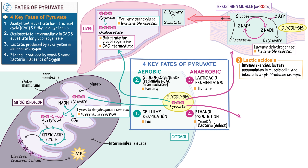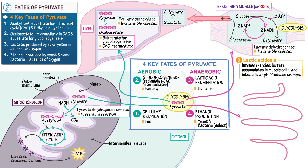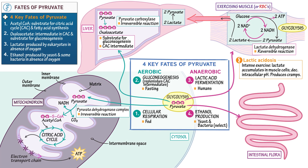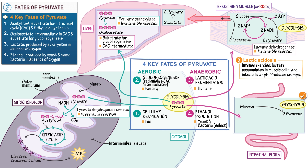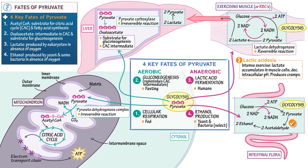This brings us to our final pathway: ethanol production. Draw an intestine to indicate that this can occur in our intestinal flora. Show that a glucose molecule in the cytosol undergoes glycolysis to produce two pyruvate molecules, with two NADHs and two ATPs produced. Pyruvate reduces to ethanol in a two-step reaction that also occurs in the cytosol. The intermediate is acetaldehyde; two carbon dioxide molecules are lost — one per pyruvate — to produce this two-carbon intermediate. Two NADHs are oxidized to produce ethanol in the second step, and NAD+ can then be reused in glycolysis. Each step requires a different enzyme. Indicate that this reaction is reversible.